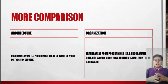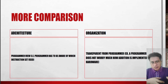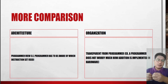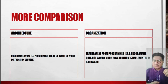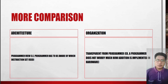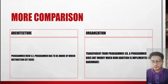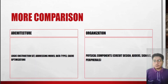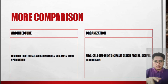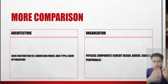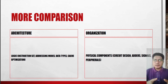For example, in the central processing unit — how will it work? How will it accept the input and produce the output from the keyboard? How will it process it, and then how will the result be displayed on the computer monitor? In architecture, it is logical. Computer architecture always focuses on the instruction set, addressing modes, data types, and cache optimization. While in organization, it focuses on physical components like circuit design, adders, signals, and peripherals — those are under computer organization.